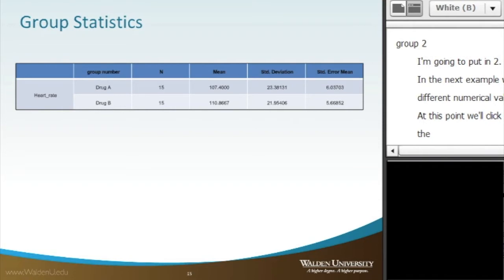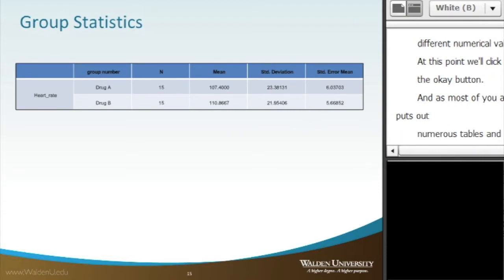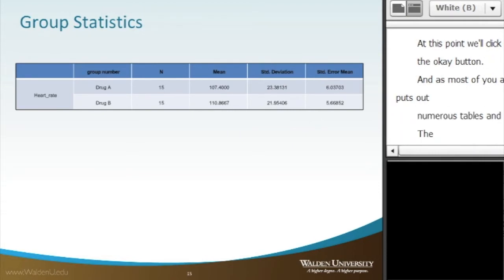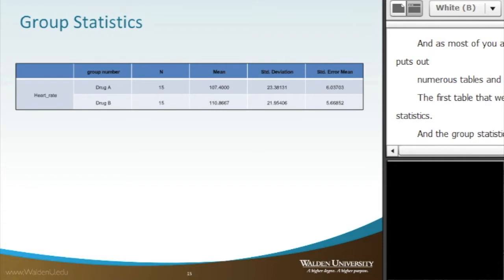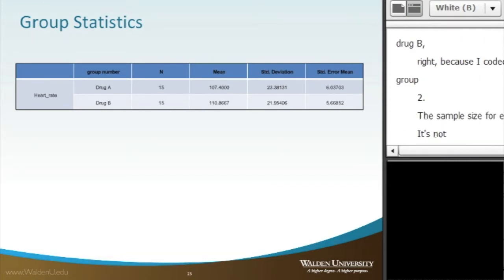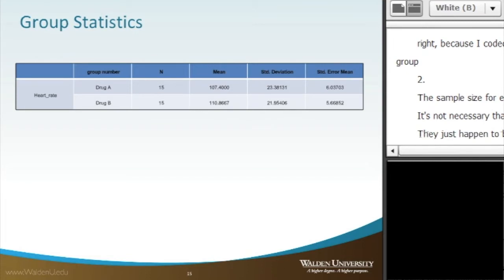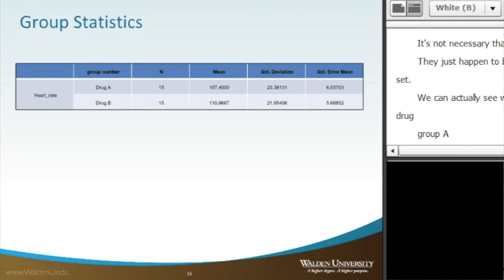And as most of you are probably familiar, SPSS puts out numerous tables and lots of information. The first table that we look at is the group statistics. In the group statistics here, we have drug A and drug B, because I coded them. I put in group one and group two. The sample size for each group is 15. It's not necessary that the sample sizes are equal. They just happen to be equal in my particular data set. We can actually see what the mean value is for drug group A and also the mean value for drug group B.